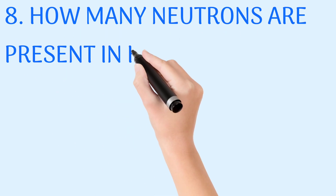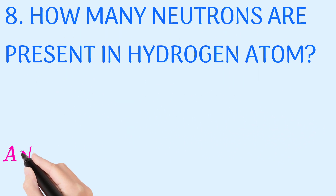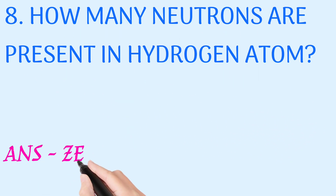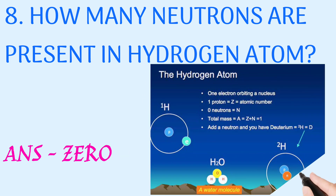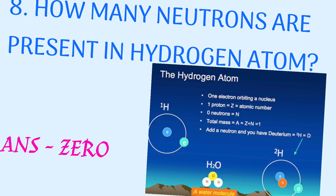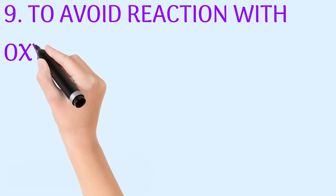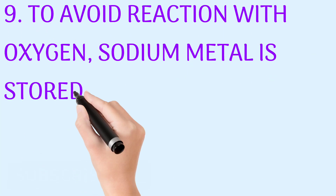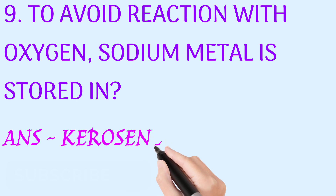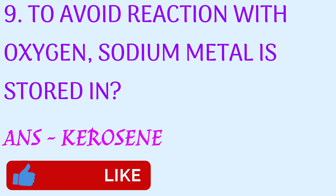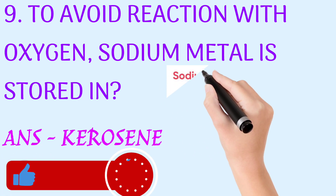How many neutrons are present in a hydrogen atom? Answer: zero. To avoid reaction with oxygen, sodium metal is stored in — answer: kerosene.